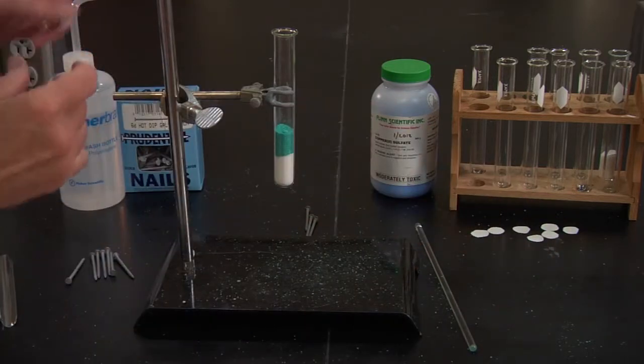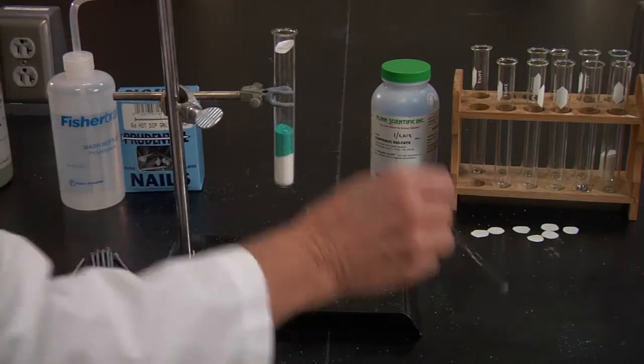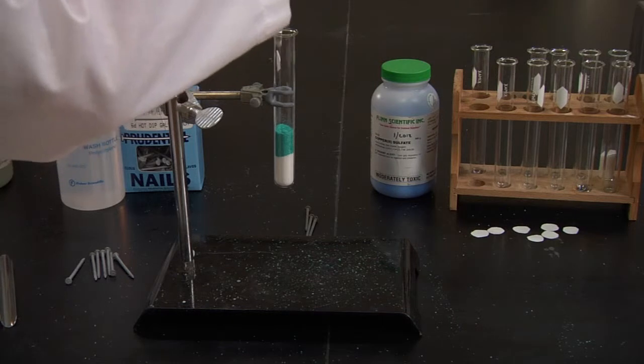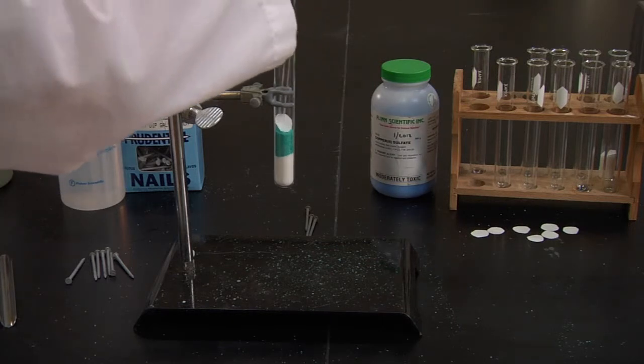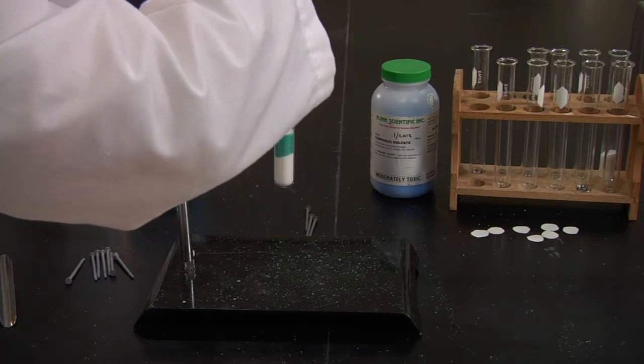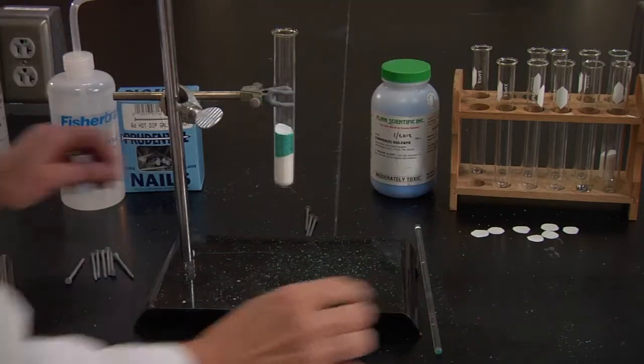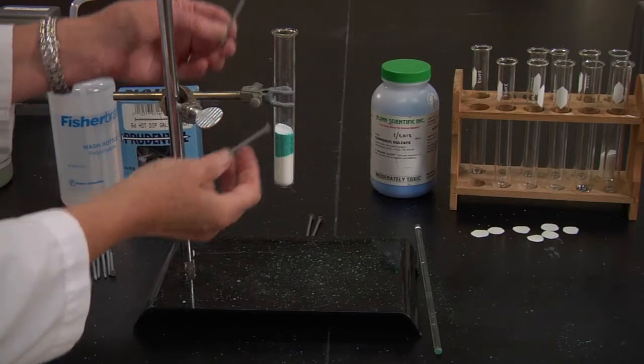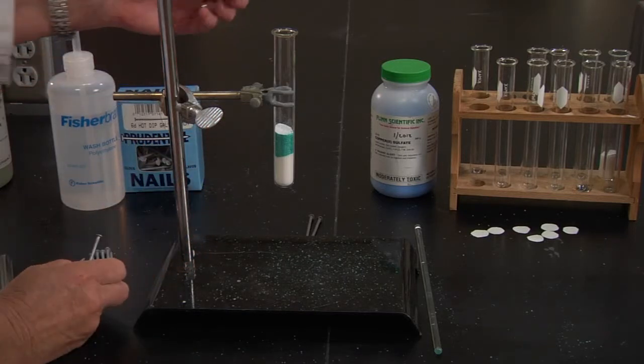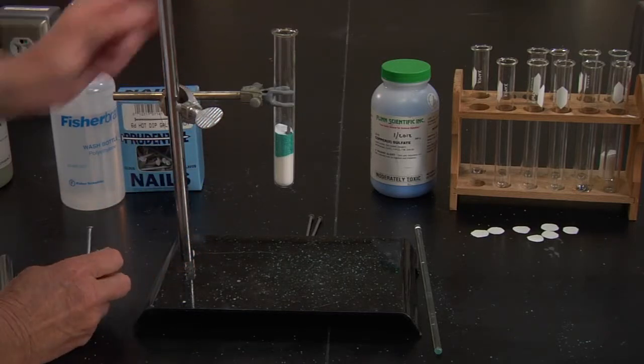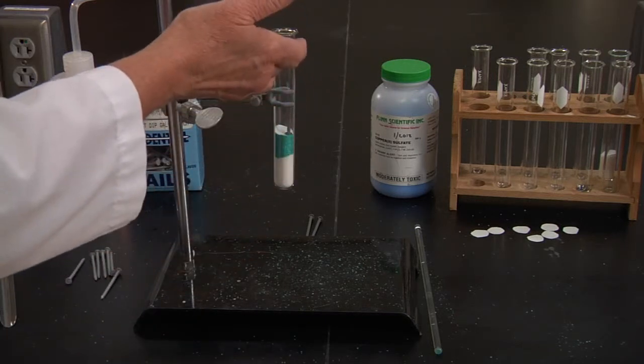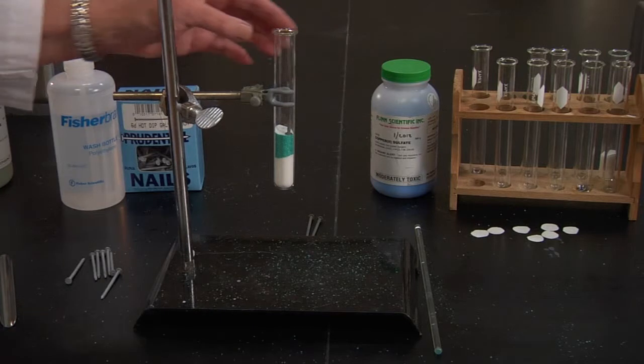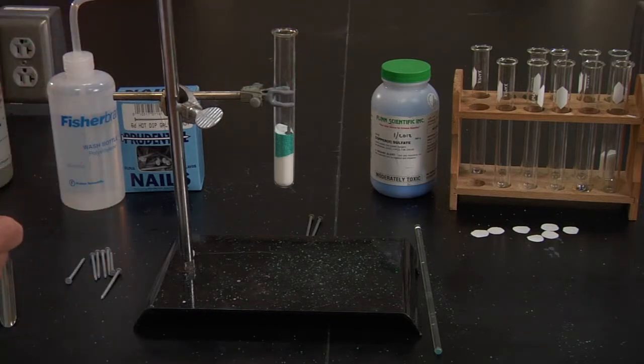Now we have a choice of either the galvanized nail or the iron nail. I'm going to use the regular iron nail for this one. Then we're going to fill this with water, set it aside in our test tube rack, and make observations.